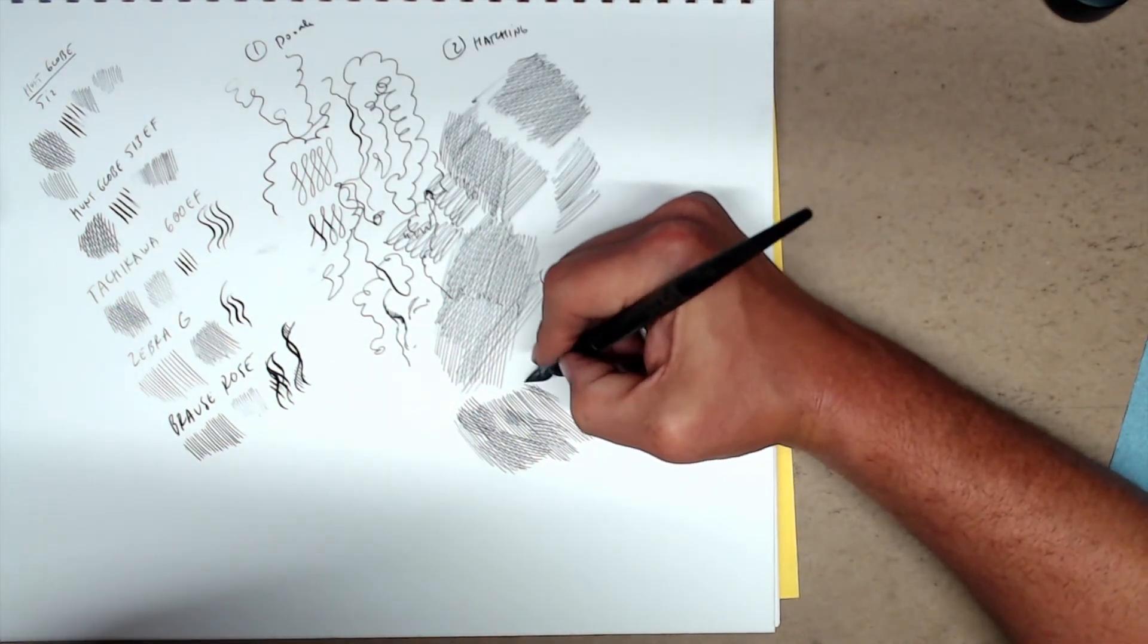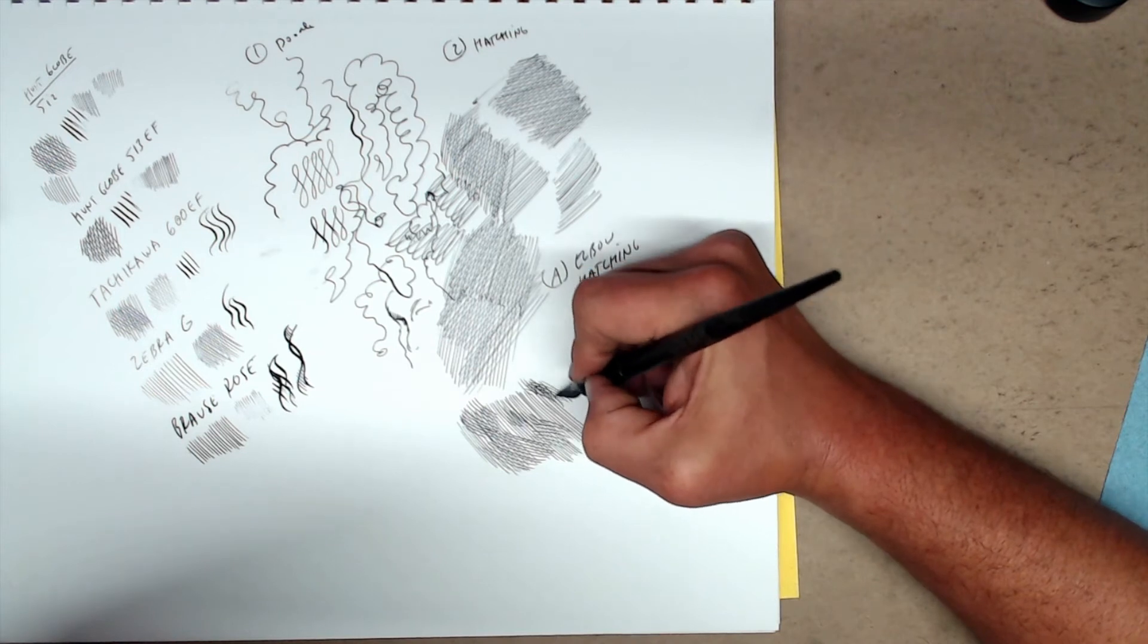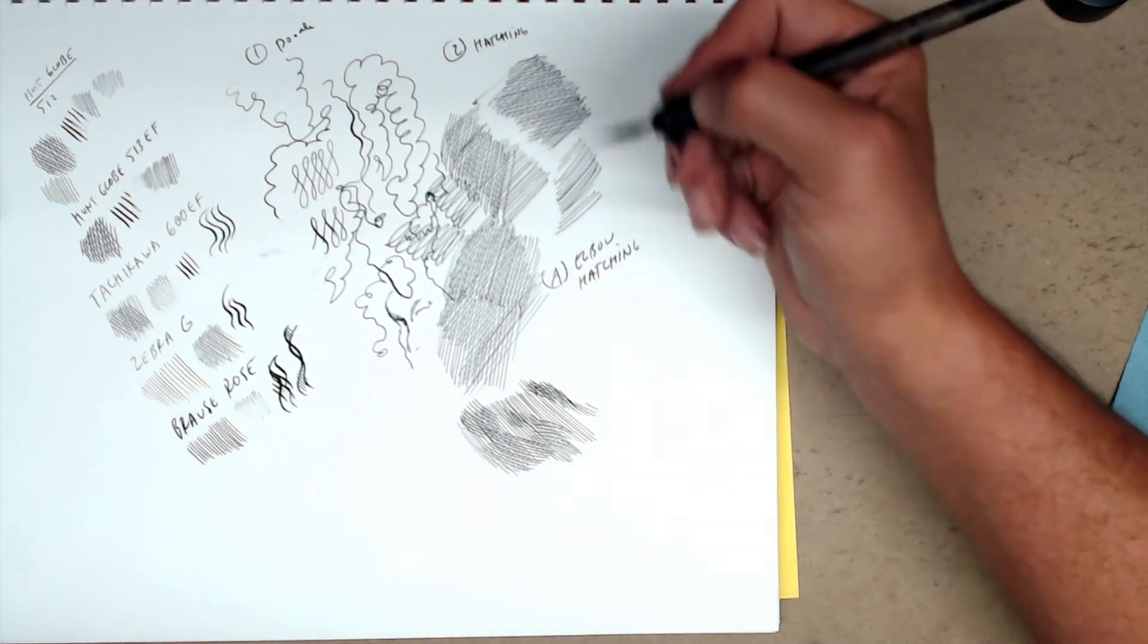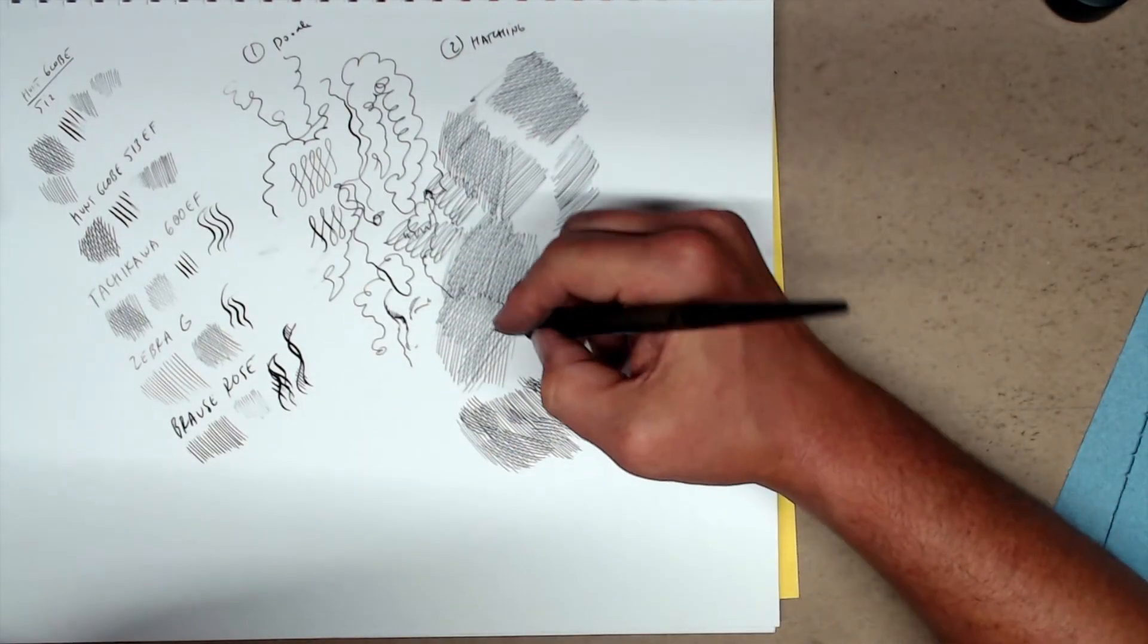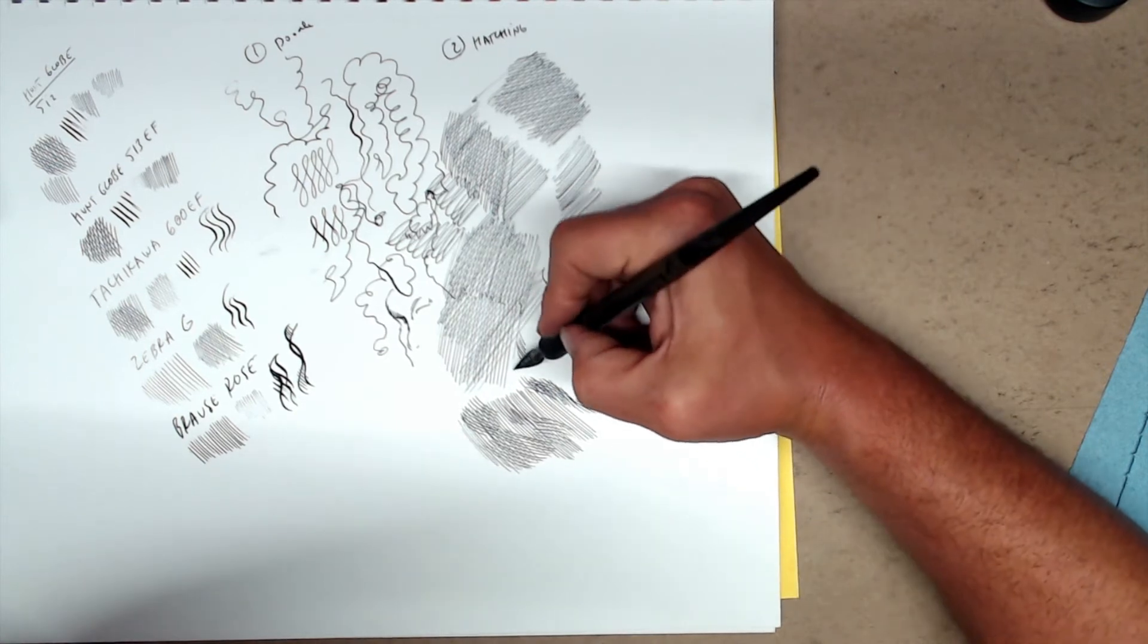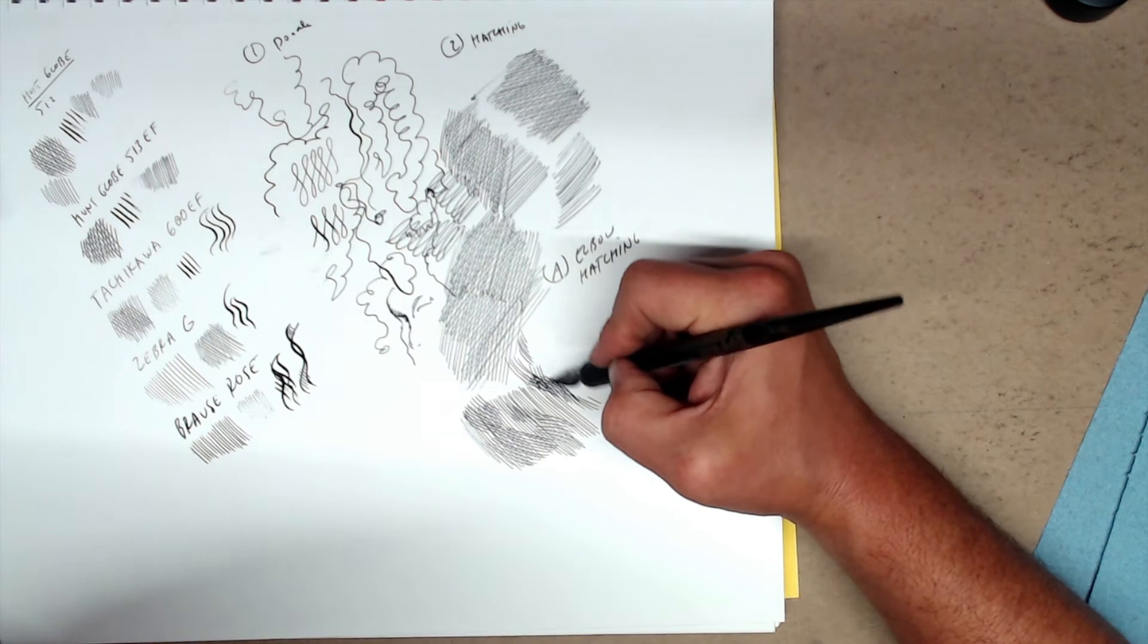So if you look at a lot of Renaissance pen and ink work, Albrecht Dürer, you'll see that he almost never hatches with a straight line. He's almost always curving around the forms doing cross contour, which is a modern term. But really reinforcing the forms that you're seeing.